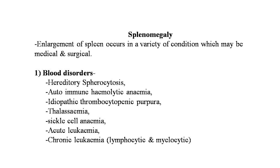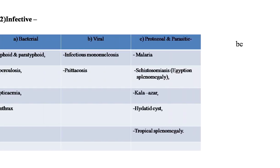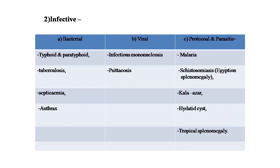Enlargement of the spleen occurs in a variety of conditions, which may be medical or surgical. Blood disorders in which splenomegaly is found include: hereditary spherocytosis, autoimmune hemolytic anemia, idiopathic thrombocytopenic purpura, thalassemia, sickle cell anemia, acute leukemia, and chronic leukemia — both lymphocytic and myelocytic. Splenomegaly due to bacterial infection includes typhoid, paratyphoid, tuberculosis, septicemia, and anthrax.